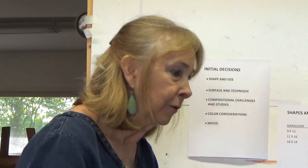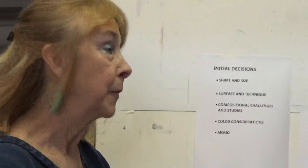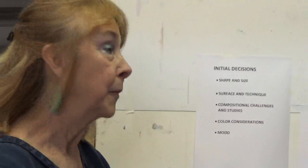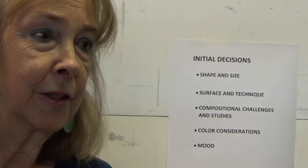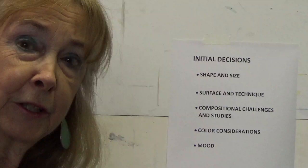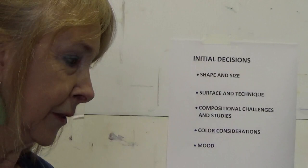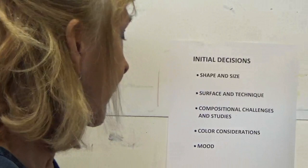So what are the decisions that we have to make? Let's assume we've chosen a photo, decided whether it's going to be vertical or horizontal, and done any necessary cropping. Now what? Here are the initial decisions: first, what shape and size will it be? Second, what surface and technique am I going to use? Third, what are the compositional challenges and what studies am I going to do? Then color — where am I going with the color? And last but not least, the mood: what is it I want to say about the picture?